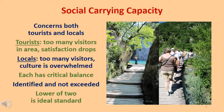A destination's social carrying capacity concerns both tourists and locals. For tourists, it's the number of visitors an area can accommodate before it gets too crowded for a specific activity and the satisfaction level drops. For locals, it's the number of tourists a destination can absorb before they begin to overwhelm and adversely affect the local culture. For each group, there is a critical balance that needs to be identified and not exceeded. Ideally, the lower of the two numbers would be the standard used.